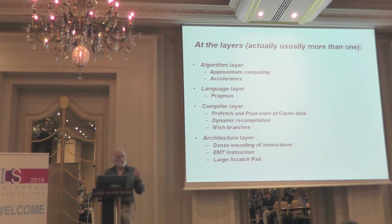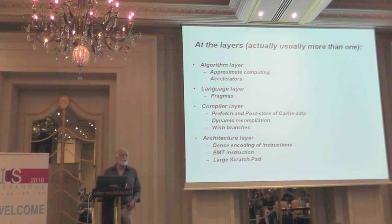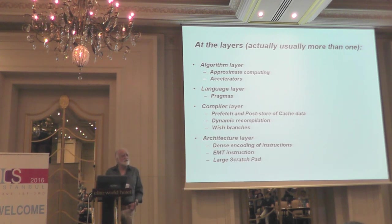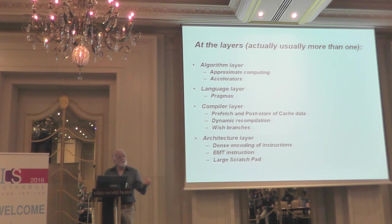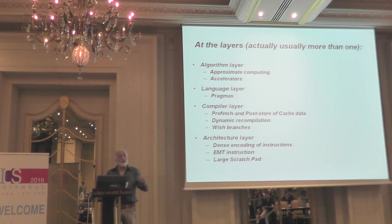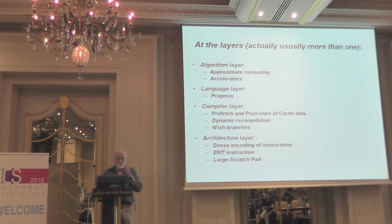Dense encoding of instructions is important at the architecture layer. Memory bandwidth is not cheap, so going back and forth between the chip and memory is problematic. Make the code denser. The notion that microcode is bad is silly — microcode is good. You densely encode the instructions, and when it's time for them to execute, they're decoded into microcode to solve the problem, saving the latency of a cache miss off-chip.